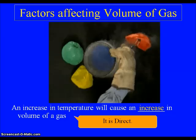If you said direct, you would be correct. A direct relationship is one where they are moving in the same direction. When we increase the temperature, the volume increases. If one increases, the other increases — that's direct. And even thinking about it the other way: if I decrease the temperature, the volume decreases. They're both decreasing. So whenever they're both moving the same direction, that is what's called a direct relationship.